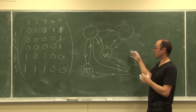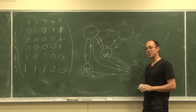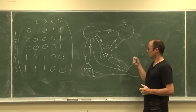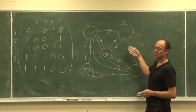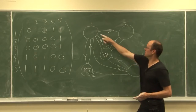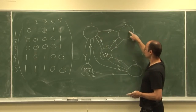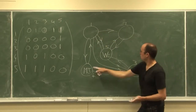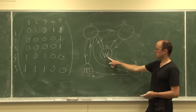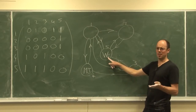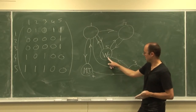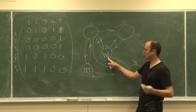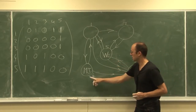So here I have a little toy model of the internet. It's obviously out of date — there's only five webpages: one, two, three, four, and five. Here's Wikipedia. So somehow, even though it's out of only five webpages, Wikipedia's there.